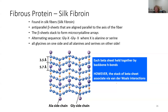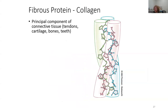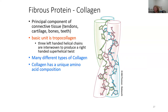Multiple levels of intermolecular interactions stabilize this structure. Another fibrous protein is collagen — the principal component of connective tissue like bones, teeth, cartilage, and tendons. The basic unit is tropocollagen. It's a helical structure, but different from your alpha helix: it has three left-handed helical chains that are interwoven to produce a right-handed super-helical twist. There are many different types of collagen, and collagen has a very unique amino acid pattern and sequence.